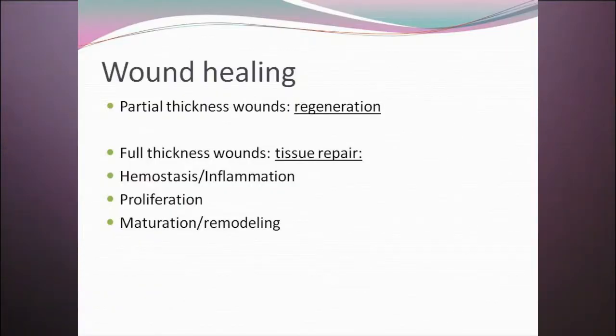When looking at a wound, an important part of your wound assessment is to try to determine what stage of tissue repair that wound is in. There are several key phases the wound has to move through in order to successfully heal or close. These are referred to as hemostasis, inflammation, proliferation, and maturation or remodeling. A wound has to progress systematically through all of these phases of healing in order for closure to occur.